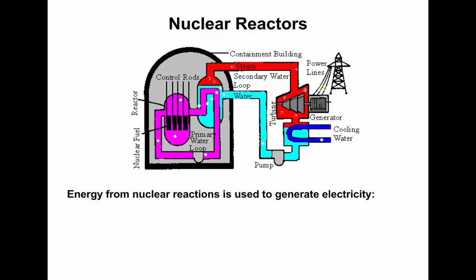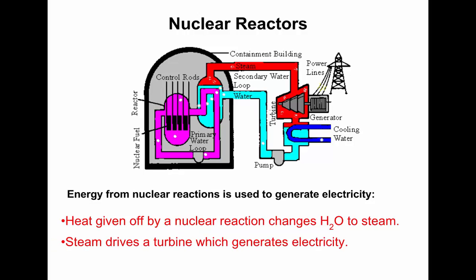Hydroelectric power works in almost a similar way, although it's water going through a dam that's turning this turbine. A wind turbine uses the power of the wind to move this turbine. A gas power generator heats water with natural gas, boils it, and then uses that steam to turn this turbine to create electricity. They're all using the same basic principle, it's just about how are you spinning this turbine. Heat given off by the reaction changes water to steam. Steam drives that turbine which generates the electricity in the power plant.